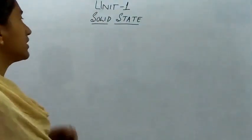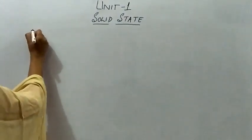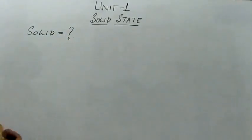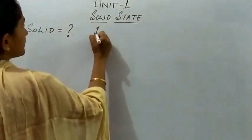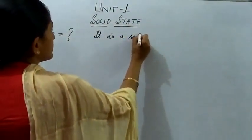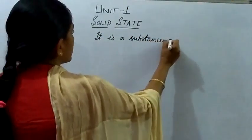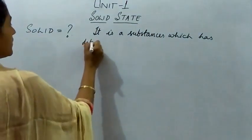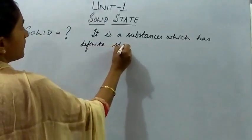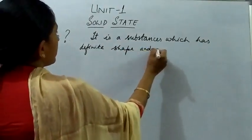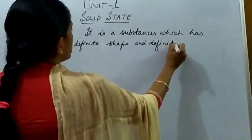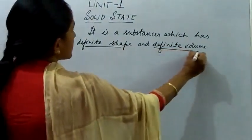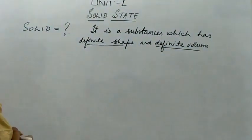Before we begin with the solid state, let us recall the previous knowledge. What is a solid? It is a substance which has definite shape and definite volume. This is your previous knowledge that any substance which has got a definite shape and a definite volume will be known as solid.